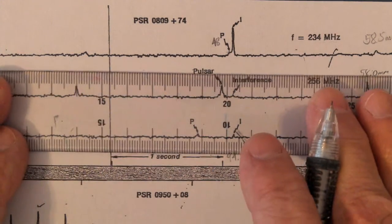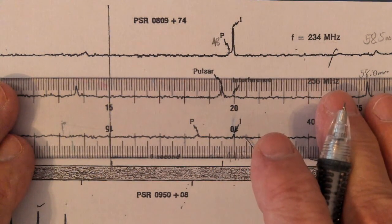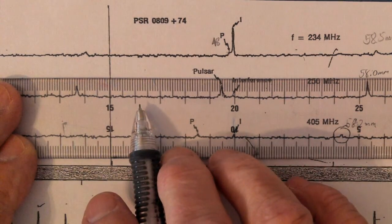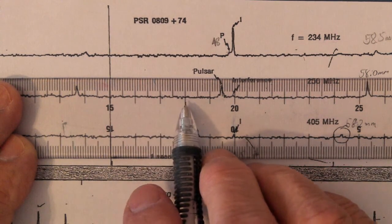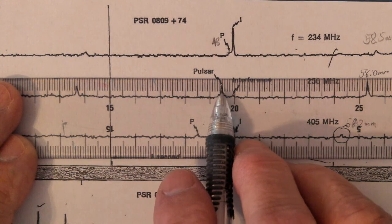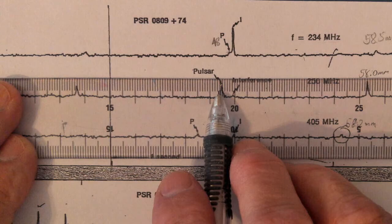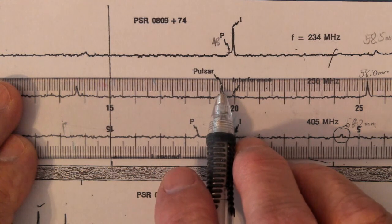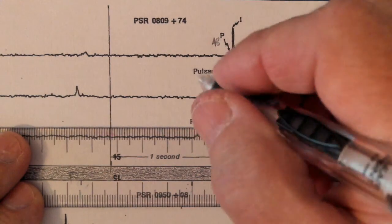And then we're going to measure from the line to the pulse. Here is 10, 20, 30, 40, 45. This is 44. So this is between 44 and 45. I'm going to call it 44.5.